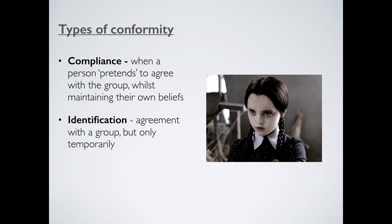The second form, which goes a little bit deeper, is something called identification. This is total agreement with a group — you've changed your own beliefs as well — but it's only really temporary. We can define things like teenage phases as being a type of identification conformity. I've got Wednesday Adams here — classic goth. Normally when we're going through our teenage phases, we dress a particular way, we act a particular way, but it doesn't last into adulthood. That's identification.